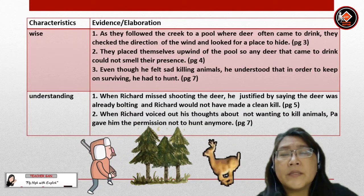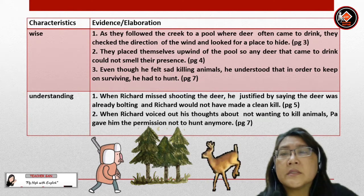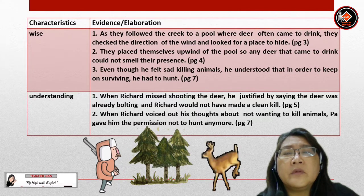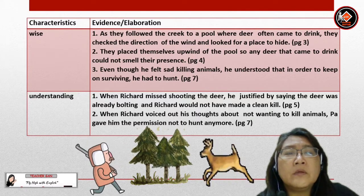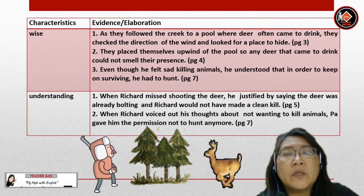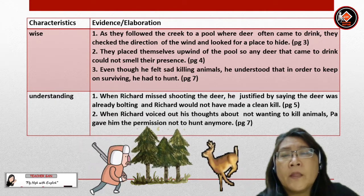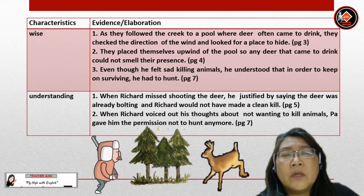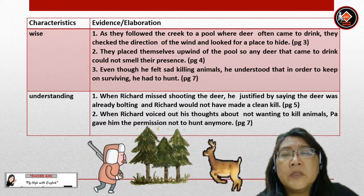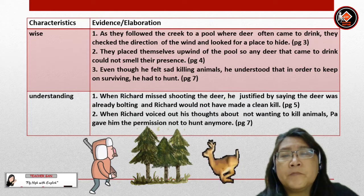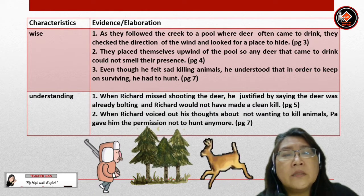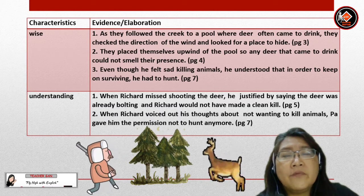Let's look at Pa's characteristics. Pa is wise. Evidence: as they followed the creek to a pool where deer often came to drink, they checked the direction of the wind and looked for a place to hide. They placed themselves upwind of the pool so any deer that came to drink could not smell their presence. Even though he felt sad killing animals, he understood that in order to keep on surviving, he had to hunt.